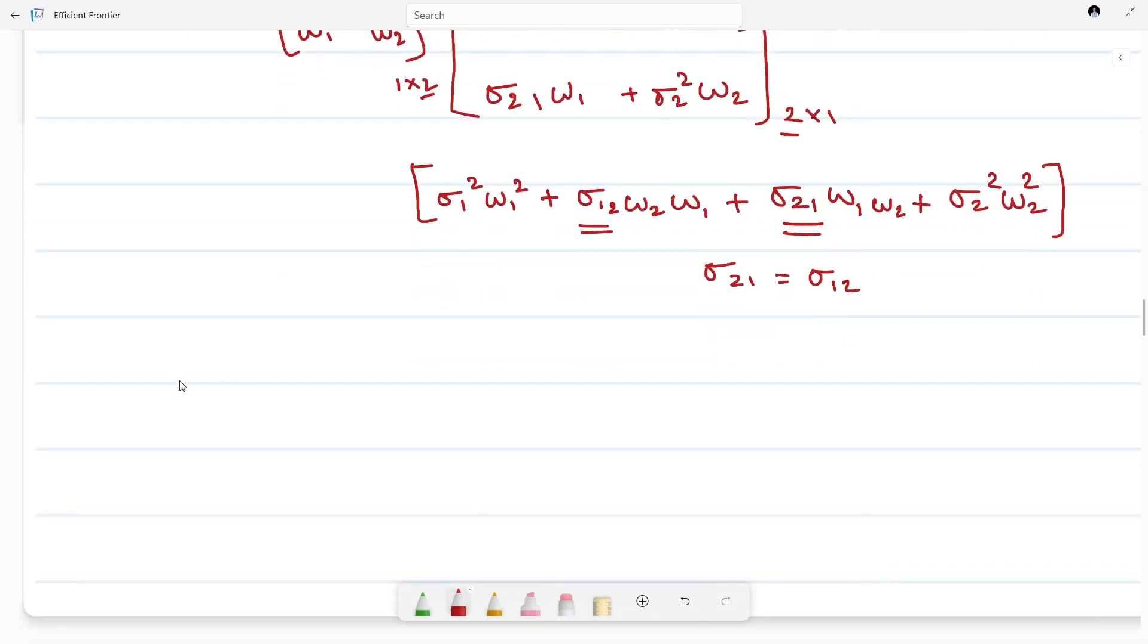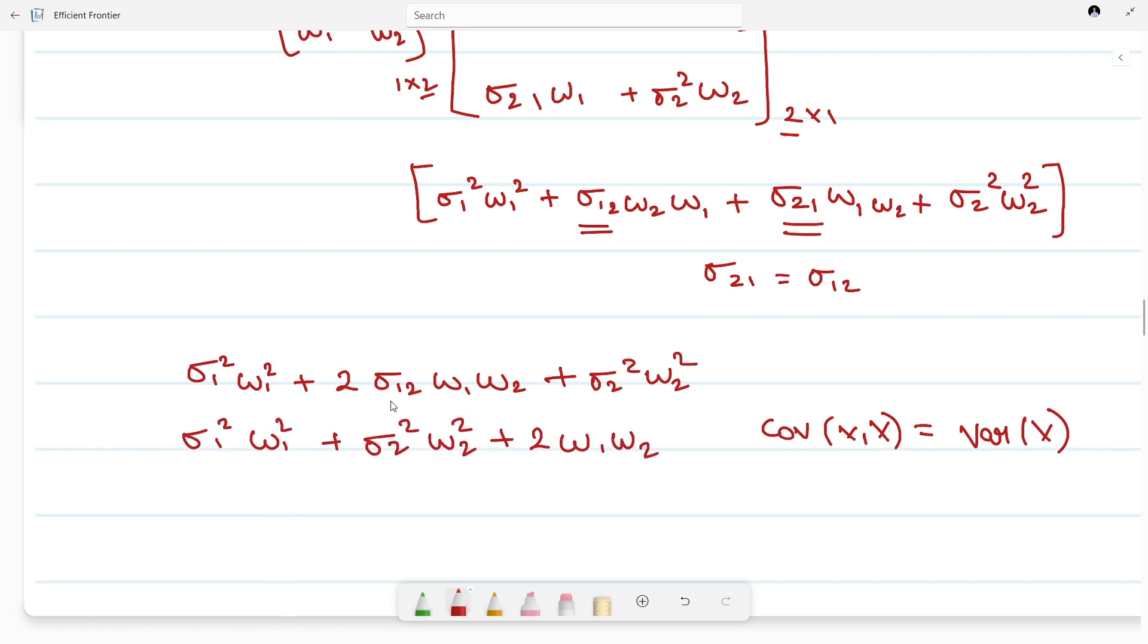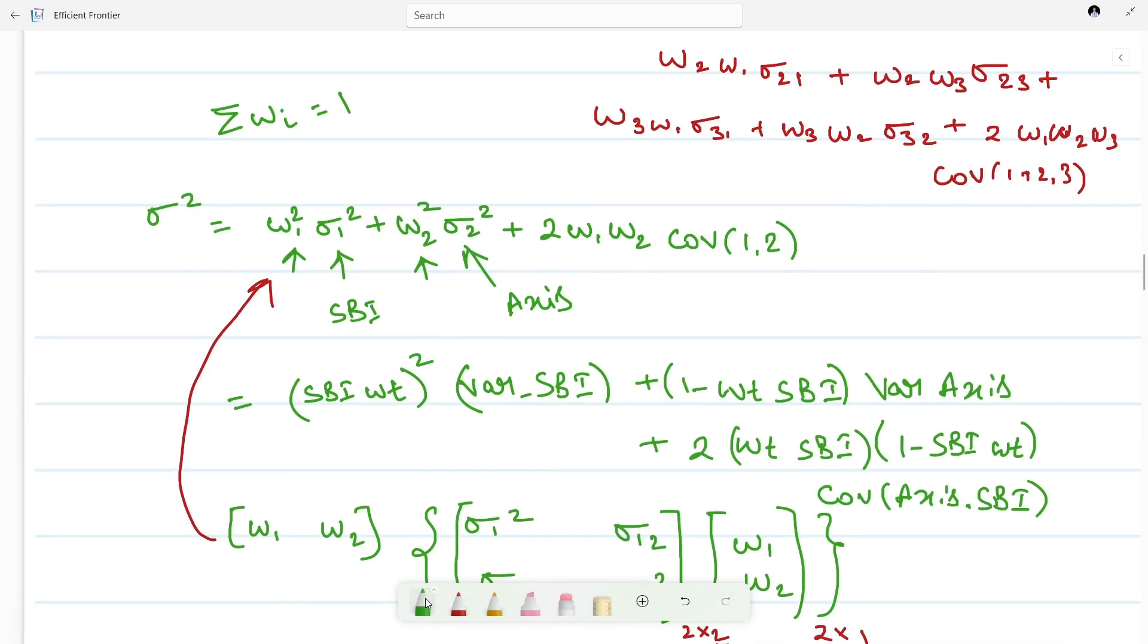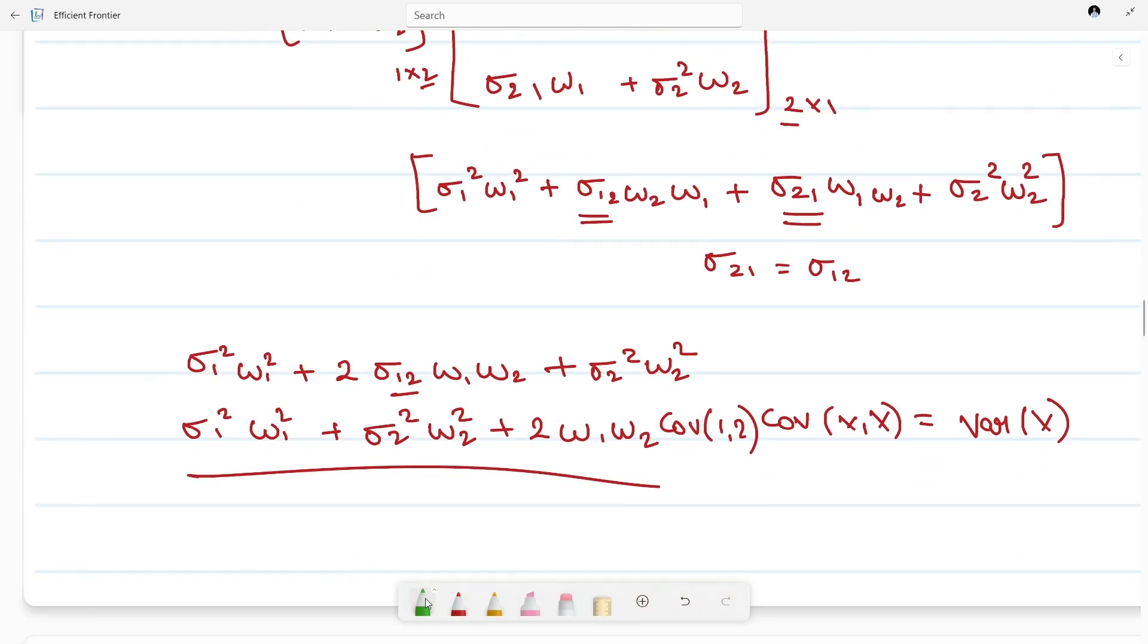In a way we can write it as σ₁²W₁² + 2σ₁,₂W₁W₂ + σ₂²W₂². Also we know covariance between X and X is nothing but variance of X. So we can write it as W₁²σ₁² + W₂²σ₂² + 2W₁W₂Cov(1,2). And if you observe it carefully, this equation is same as what we have written above. Hence this is how we are getting this.